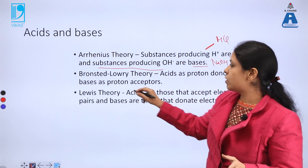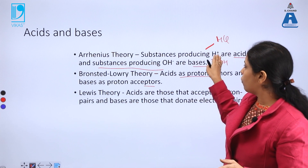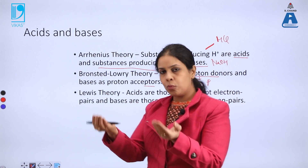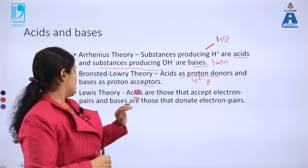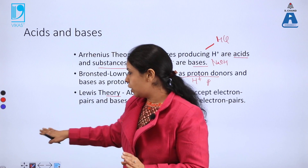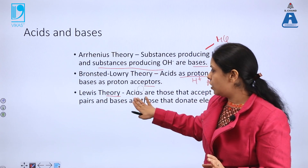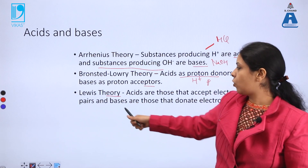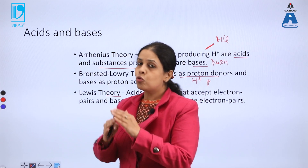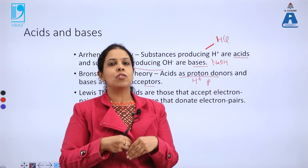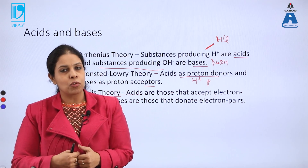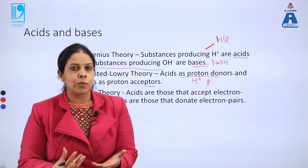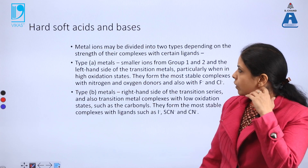Next is Brønsted-Lowry theory. Both independently said that acids are proton donors and bases are proton acceptors. Those who donate protons (H⁺) are acids, and those who accept these protons are bases. Next is Lewis theory, which gives a much wider definition. It says acids are those that accept electron pairs and bases are those that donate electron pairs. Species with low electron density accept electrons and are acids; electron-rich species donate electrons and are bases.